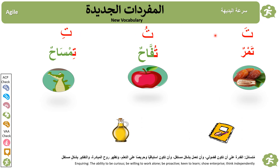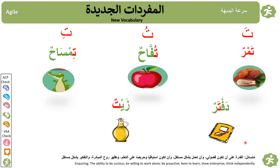Vocabulary with Taa: تَمر (Tamr) — dates. تُفاح (Tuffah) — apples. تِمساح (Timsah) — crocodile. دفتر (Daftar) — notebook. زيتون (Zaytun) — olives.